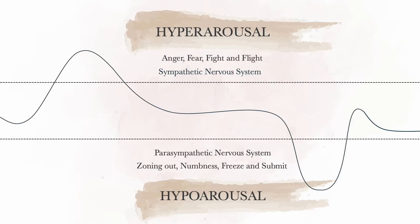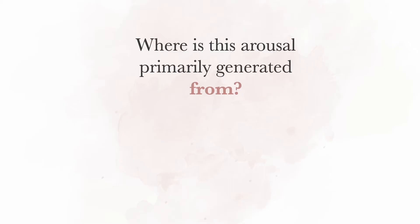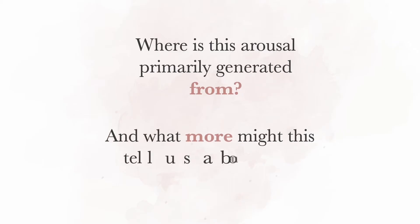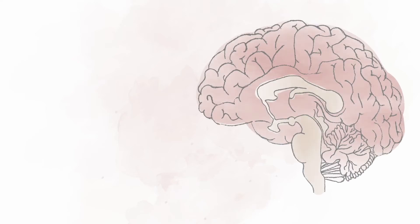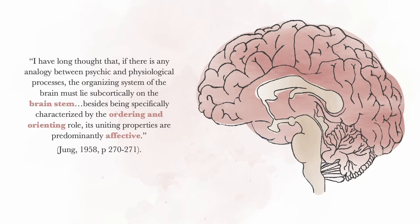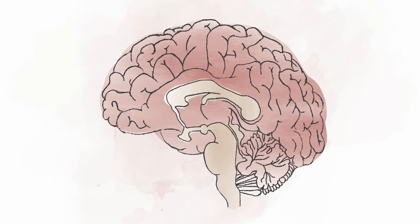However, there are two questions we might ask of this model: Where is this arousal primarily generated from? And what more might this tell us about traumatic responding? Carl Jung wrote in 1958, "I have long thought that if there is any analogy between psychic and physiological processes, the organising system of the brain must lie subcortically on the brain stem. Besides being specifically characterised by the ordering and orienting role, its uniting properties are predominantly affective." So what is happening in the brain stem during traumatic activation? We'll look at three structures of the brain stem.